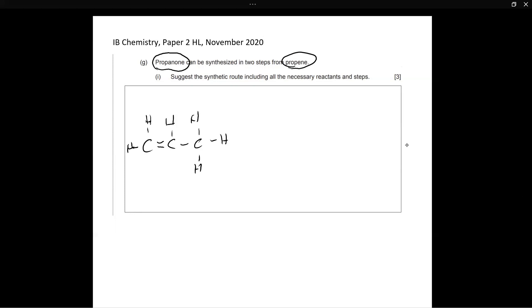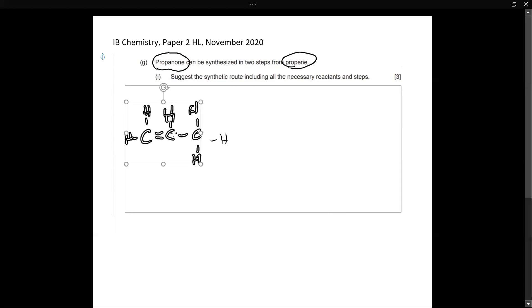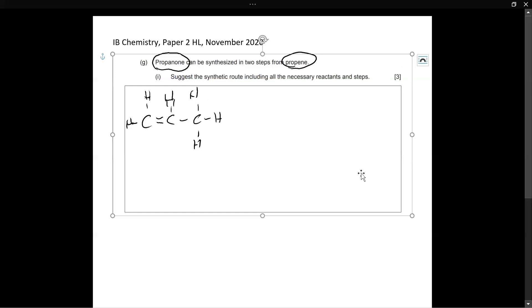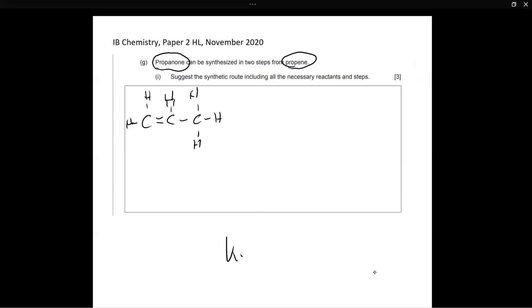And my final product, I understand it's going to be a bit squished over here. But hopefully you'll understand what I'm doing nonetheless. So this is propene. What about propanone? What is propanone? Propanone is this. Propanone is a ketone.